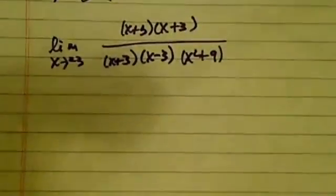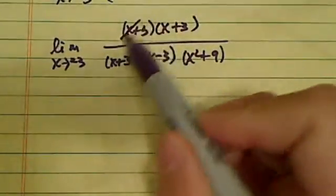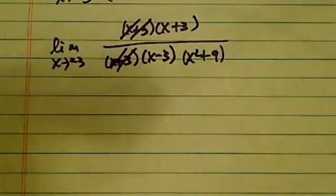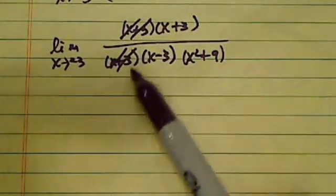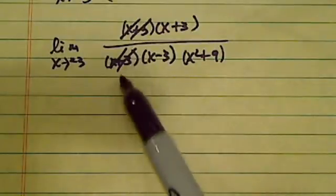So from there, you can see where the trick comes in now. The x plus 3 actually gets cancelled. So we actually avoid the 0 over 0 because there's a cancellation here.